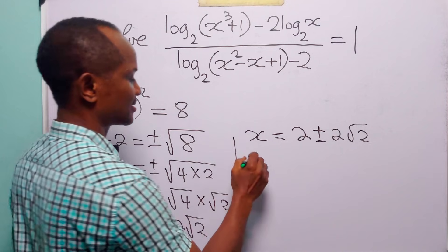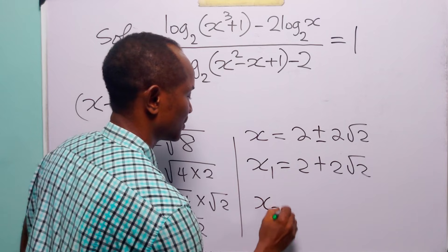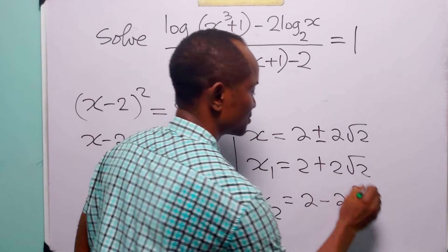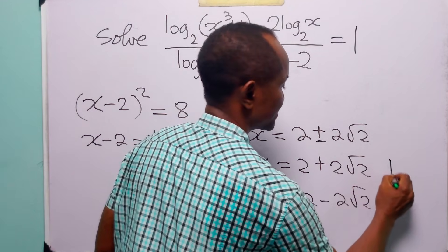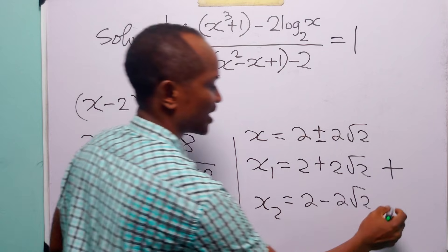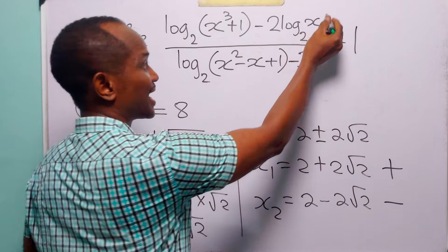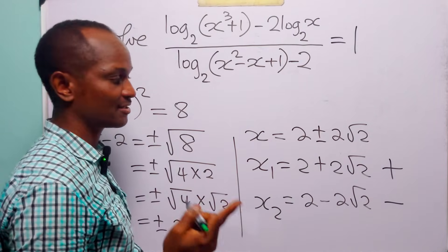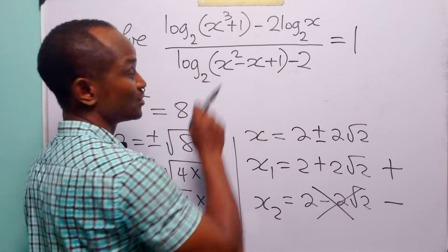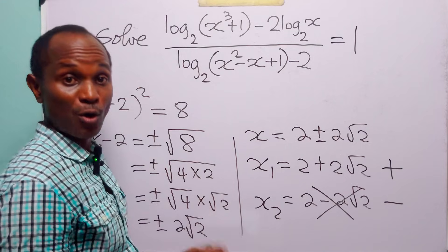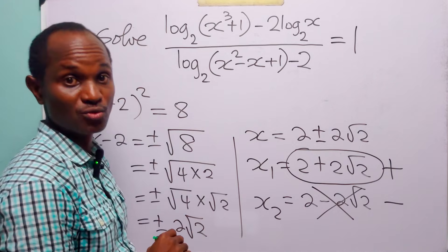We have two values of x: 2 plus 2 root 2, and 2 minus 2 root 2. Let us go back to the original equation. This first value of x is positive while this value is negative. Since the argument of a logarithm cannot be negative, this value is unacceptable. So the only value of x that satisfies this logarithmic equation is x equal to 2 plus 2 root 2.